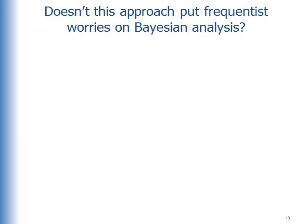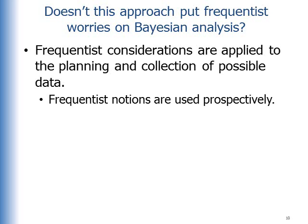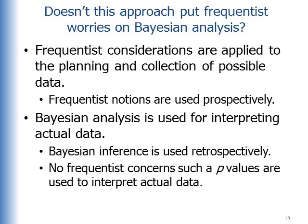Now you might wonder, doesn't this approach put frequentist worries on Bayesian analysis? Well, the frequentist considerations are applied to the planning and collection of possible data. The frequentist notions are used prospectively—in other words, what would happen if I collected data this way? What would happen if I stopped according to these criteria? But Bayesian analysis is used for interpreting actual data. Bayesian inference is used retrospectively, and there are no frequentist concerns such as p-values used to interpret the actual data.